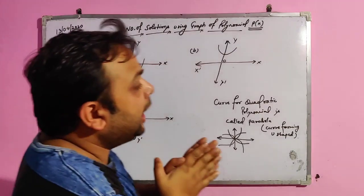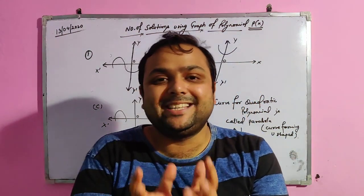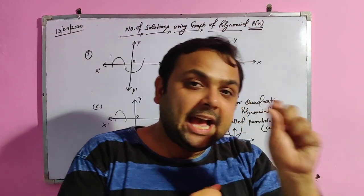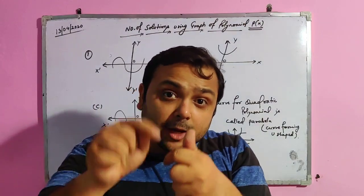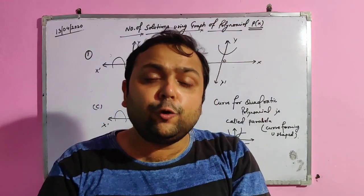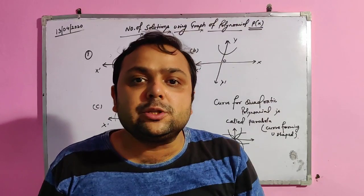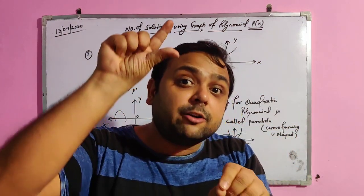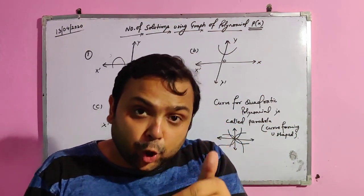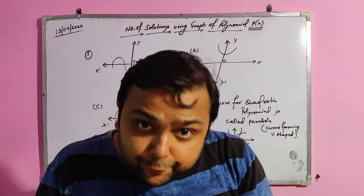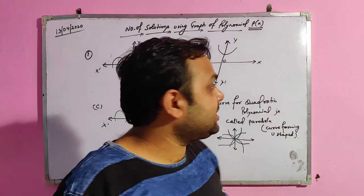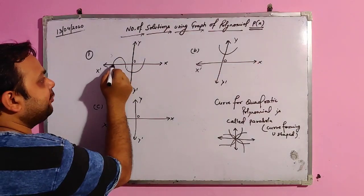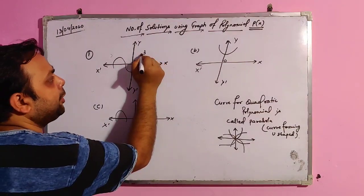Now I will explain how to calculate the number of solutions by looking at a graph. For the polynomial p(x), which is in terms of x, we look at the x-axis to find solutions. If the polynomial were p(y), we would look at the y-axis. By seeing a graph, we count the number of points where the curve cuts the x-axis — for example, if it cuts at 3 points, there are 3 solutions.